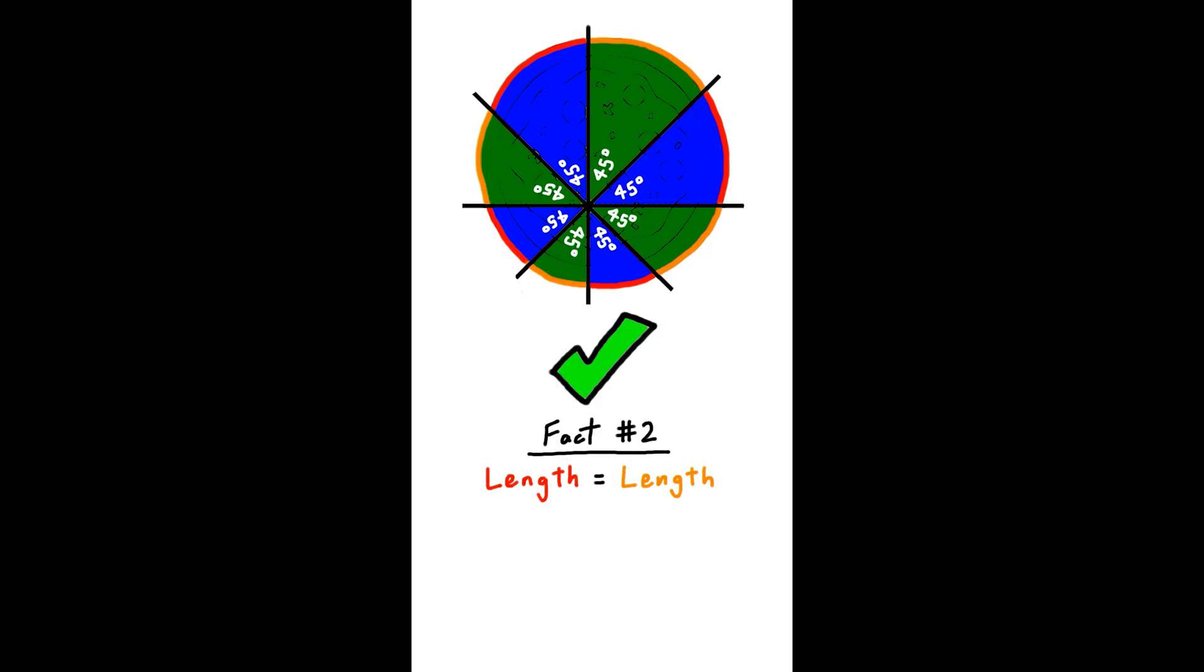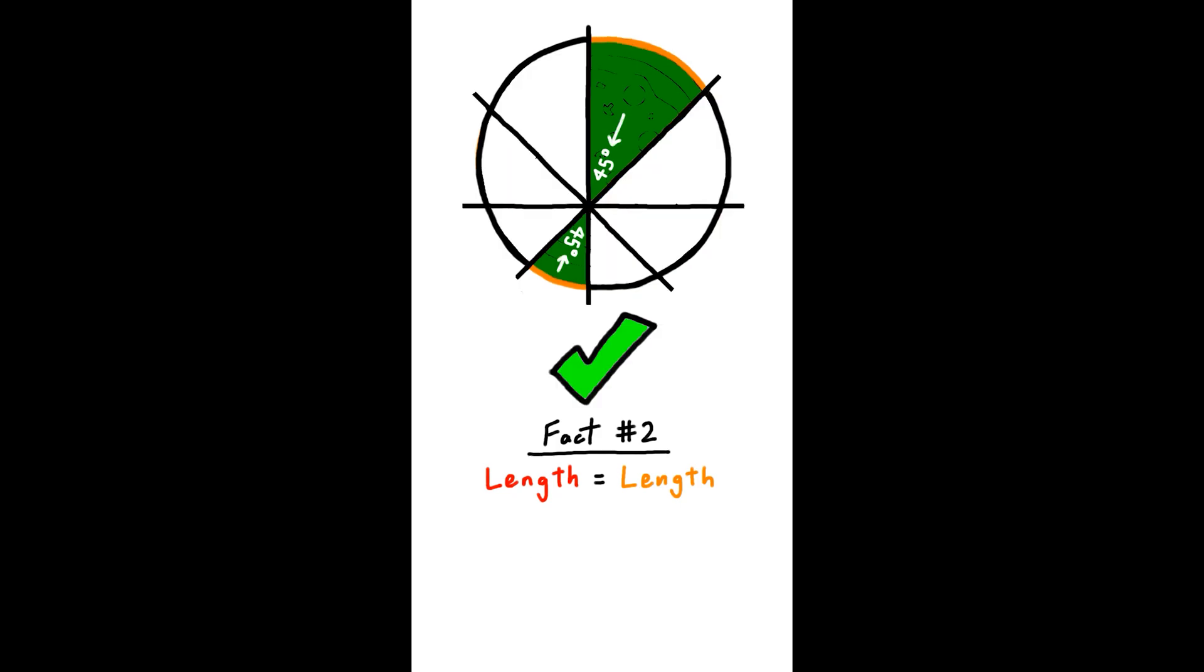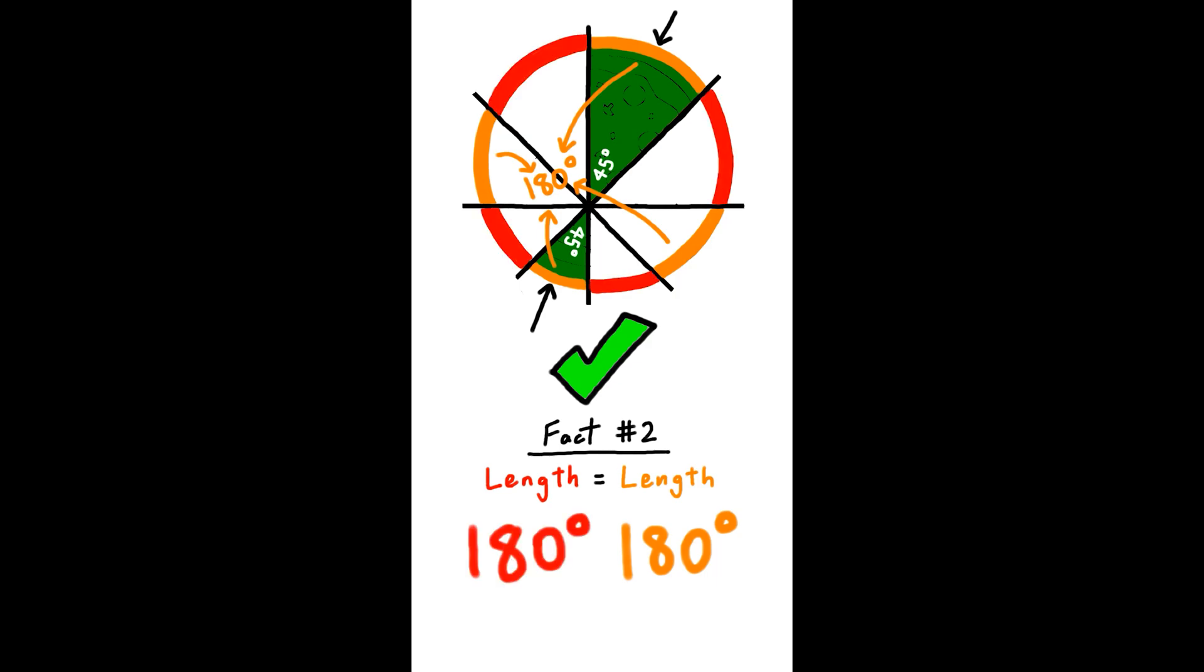The second fact is true. To see why, we focus on two opposite slices. This angle is 45 degrees, meaning the sum of these two arcs is double that, 90 degrees. The same can be said over here, so a total of 180 degrees. Repeat the process for the remaining four slices, and we get 180 degrees again, the same amount of crust.